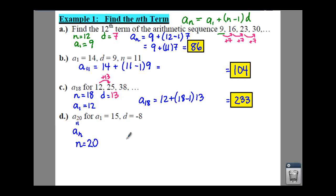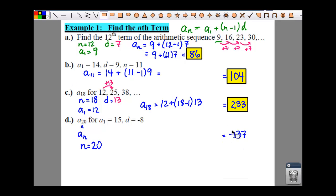Do your work. So you should get the answer of negative 137. So that is how you find your n term using a formula.